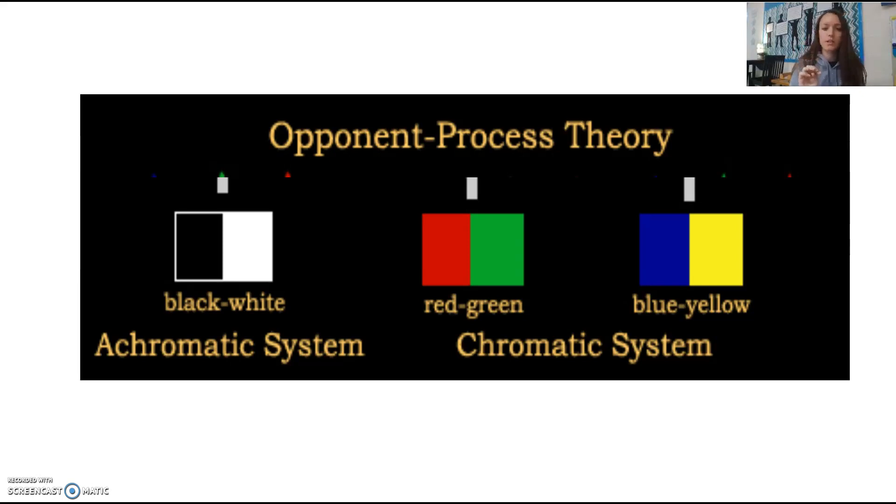The opponent-process theory is good at explaining how someone could have color blindness, whereas the trichromatic theory of color has a more difficult explanation of trying to understand color blindness. But according to the opponent-process theory, if someone is color blind, then one of their photoreceptors isn't working properly. So if they have red-green color blindness, their red-green photoreceptor isn't working, and so they are seeing the world in shades of blues and yellows. They're also getting those blacks and whites, but they're not able to see the reds and greens.